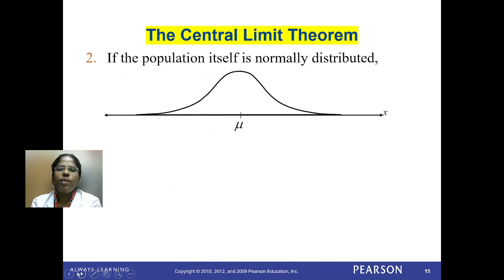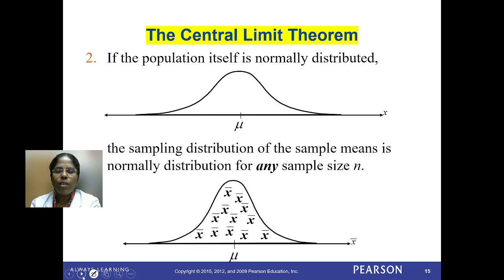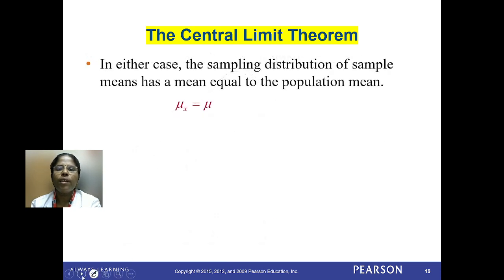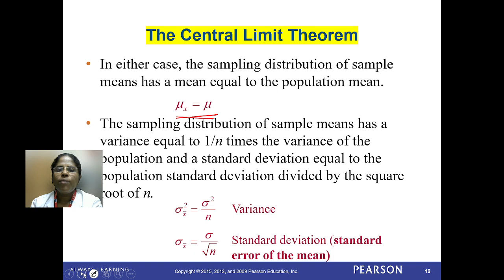The main points of the central limit theorem: if the population itself is normally distributed, then the sampling distribution of a sample mean is normally distributed for any sample size n. In either case, the sampling distribution of the sample mean has a mean equal to the population mean. The variance equals sigma-squared / n (that is, 1/n times the population variance), and the standard deviation equals sigma / sqrt(n), which is the standard error of the mean.